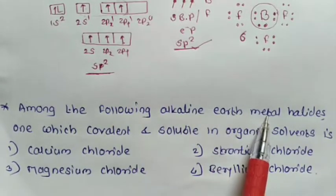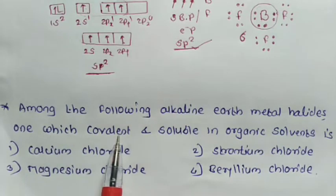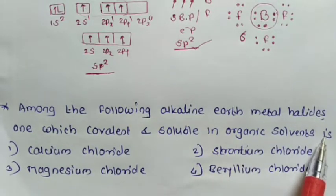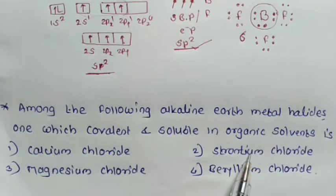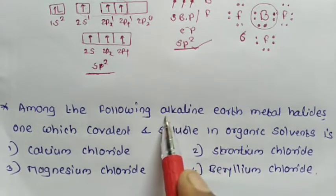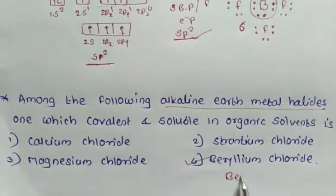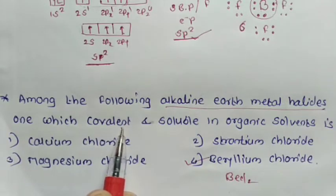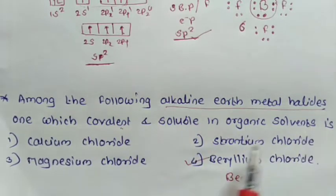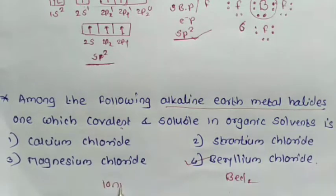Third question: Among the following alkaline earth metal halides, identify which one is covalent and soluble in organic solvent: (1) calcium chloride, (2) strontium chloride, (3) magnesium chloride, (4) beryllium chloride. Out of these four, beryllium chloride (BeCl2) is covalent in nature and soluble in organic solvents. The other three form ionic compounds and are insoluble in organic solvents.